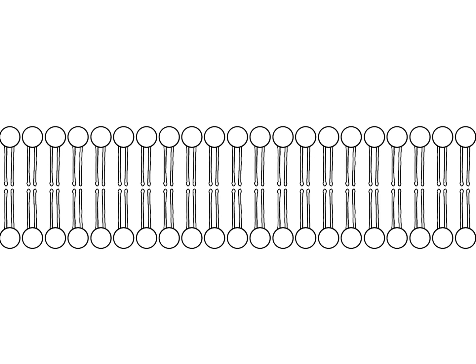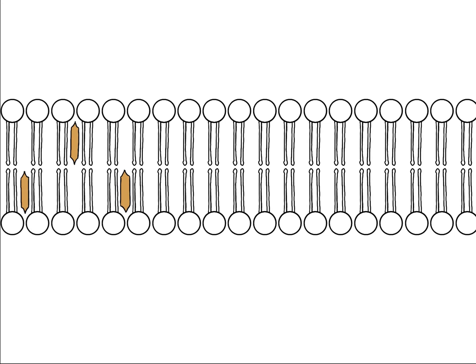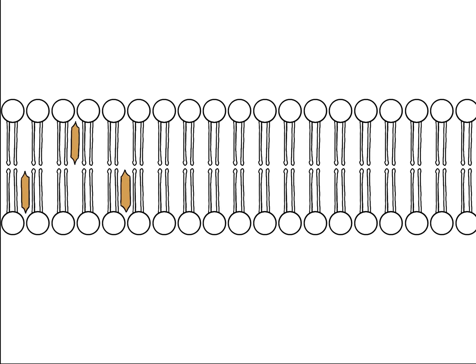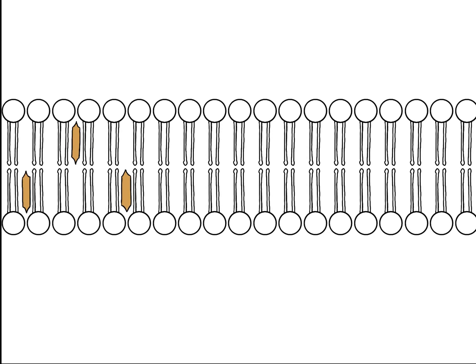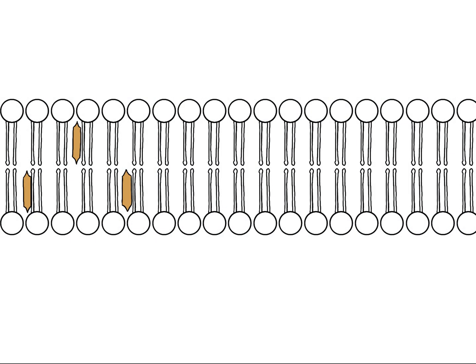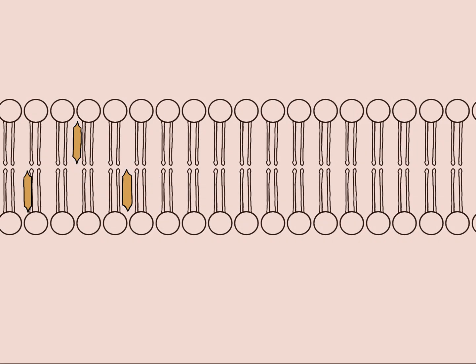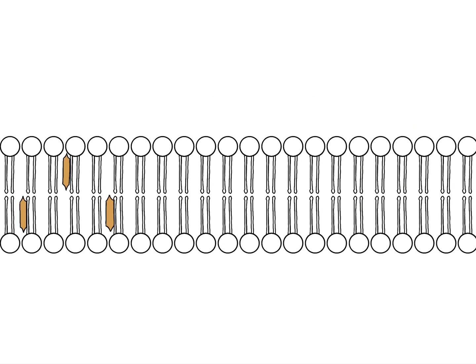In between the phospholipids of the bilayer, there are cholesterol molecules which stabilize the bilayer by keeping phospholipids at relatively normal distances from each other. When it is too cold, cholesterol keeps the phospholipids apart so it is still fluid. When it is too hot, cholesterol keeps the phospholipids together so the bilayer doesn't fall apart.